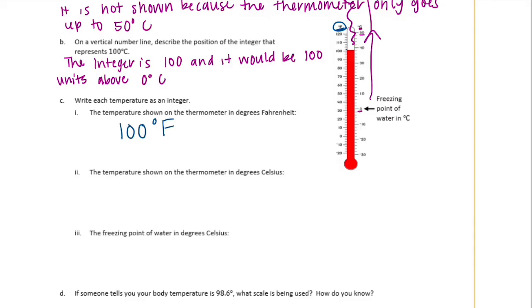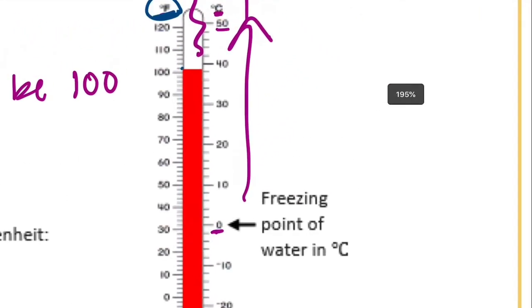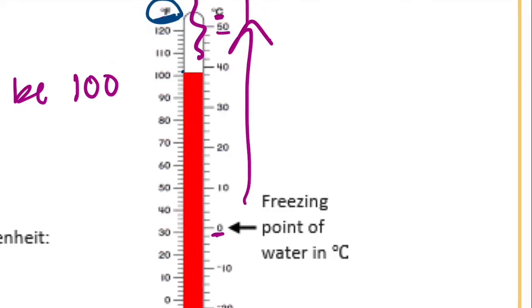The temperature is shown on the thermometer in degrees Celsius. So now we're going to go to the other side. So what degrees Celsius do we have? So there's 30 right there and 40 right there. And there's one, two, three, four, five spaces in between. So that means we're counting by two. So 32, 34, 36, this looks like 38 degrees Celsius.